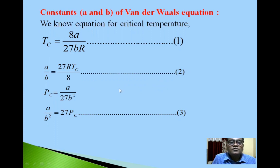Now you know Pc is equal to a upon 27b square. So from this we will get value of a upon b square as 27Pc. Equation 3.